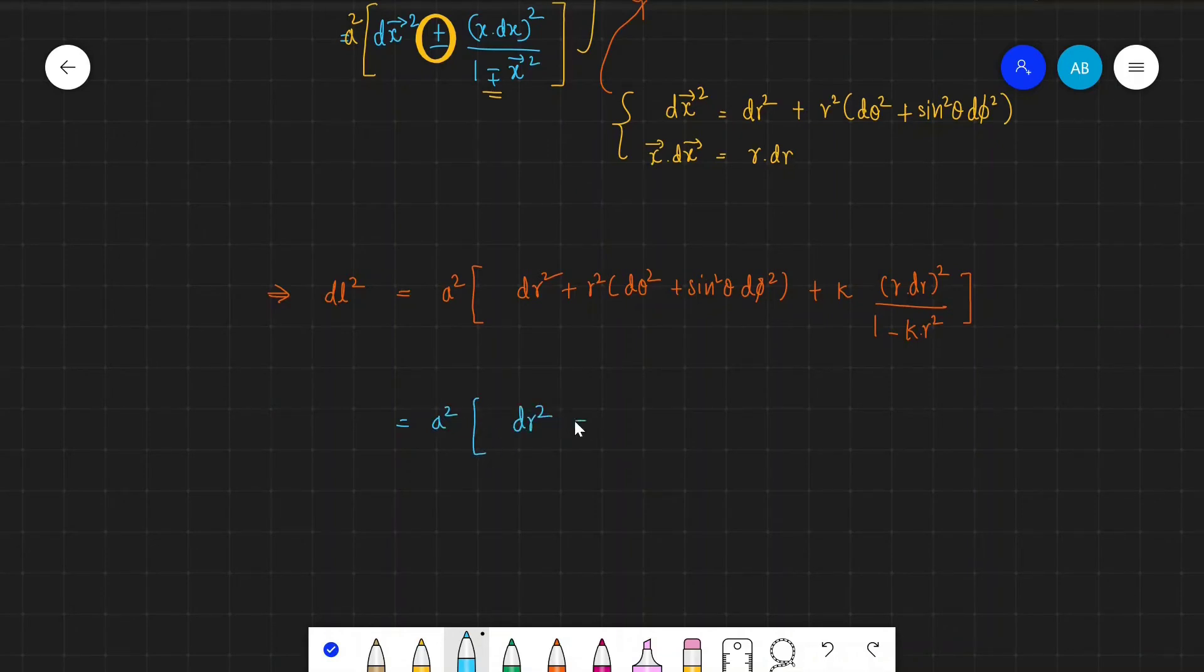We get a² times dr² plus kr² dr² over 1 minus kr², plus this middle part r² — let's call it dω². This underlined part we're calling dω².